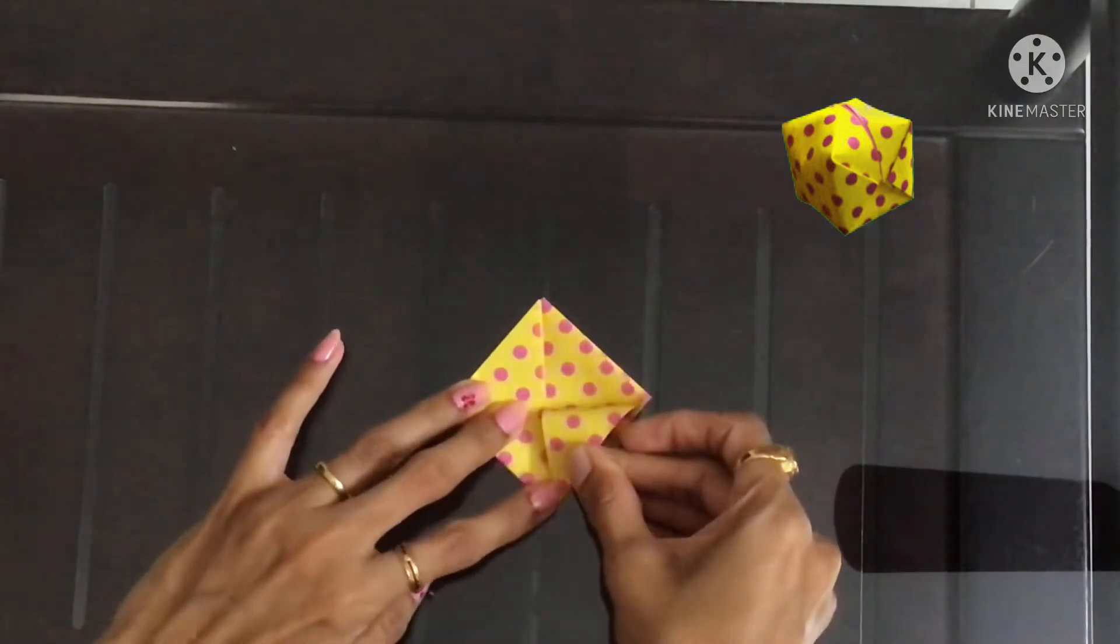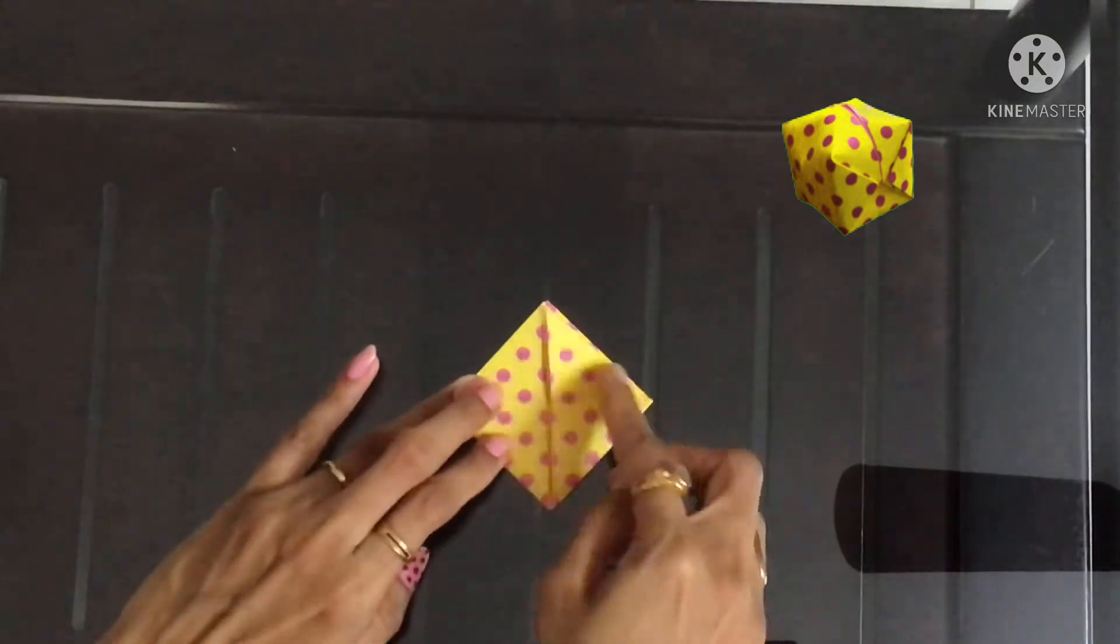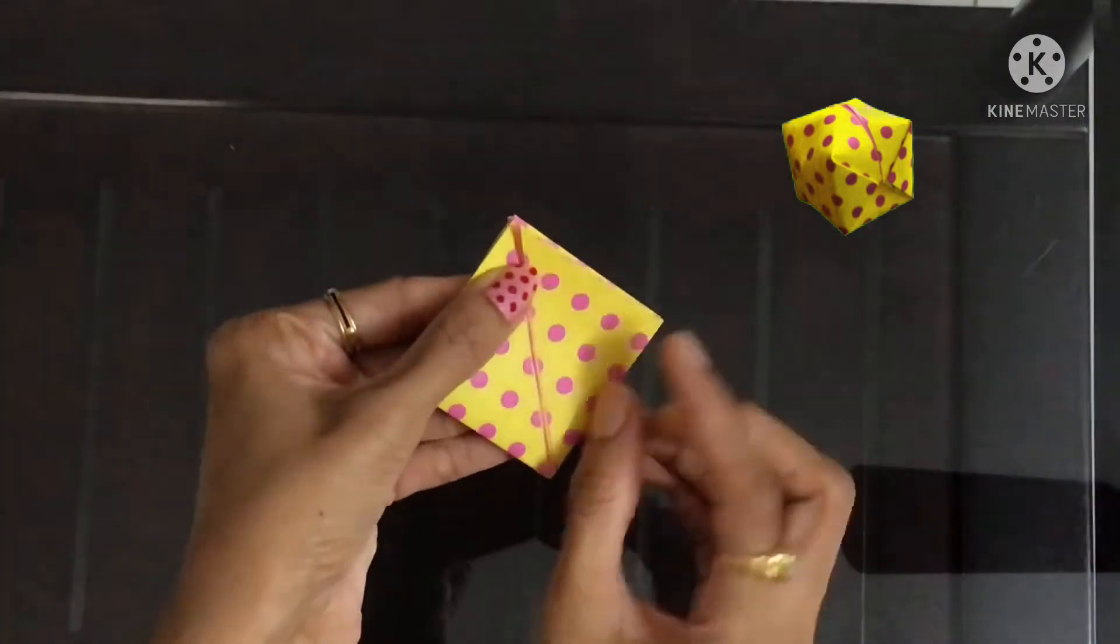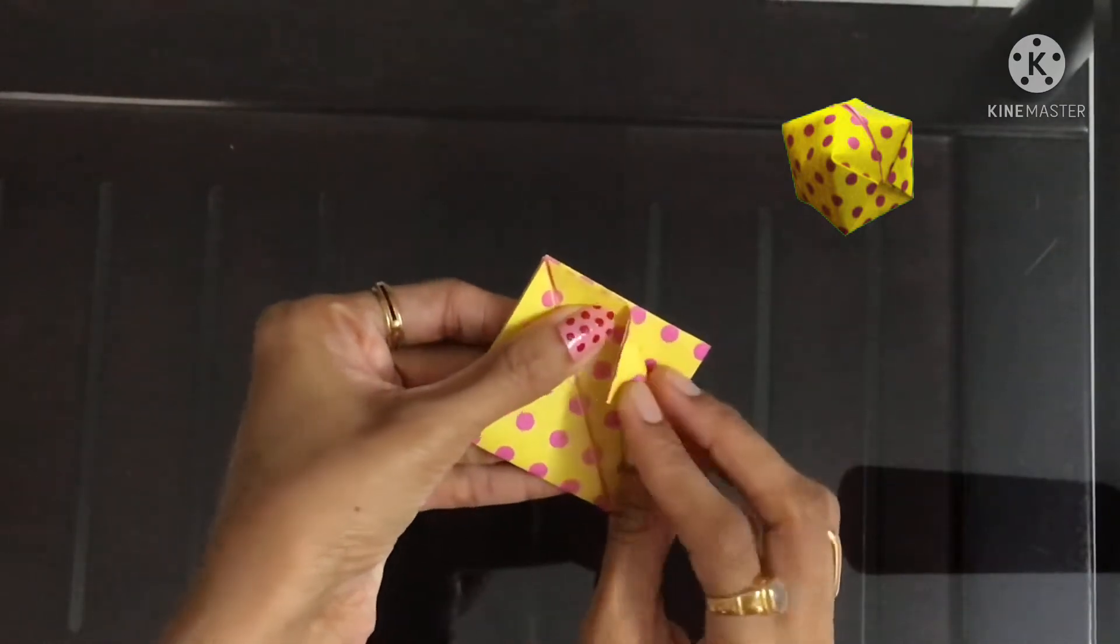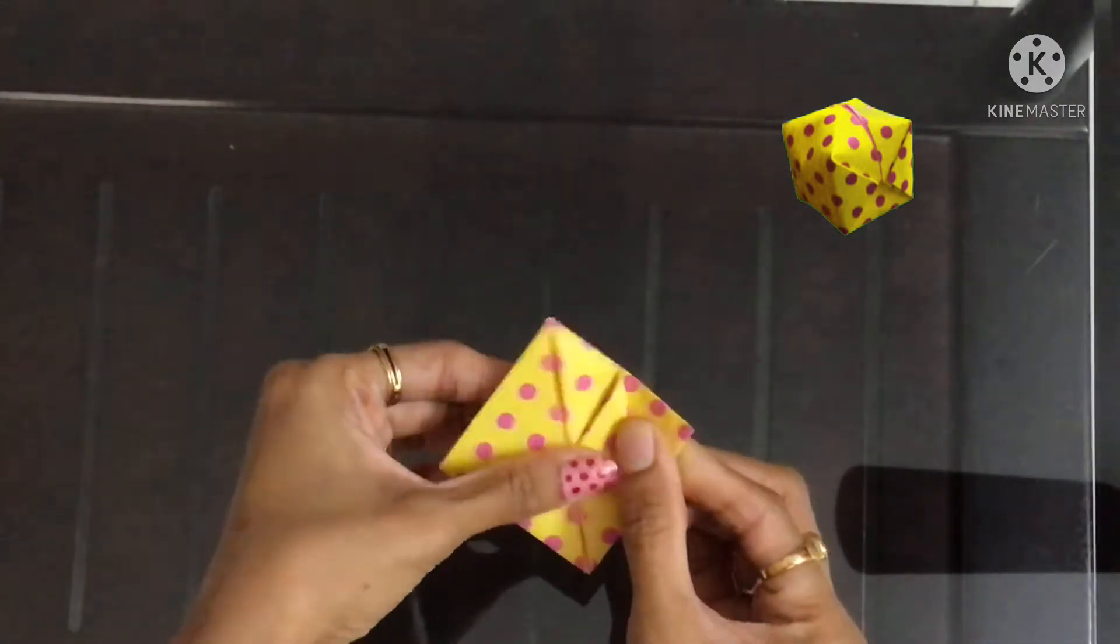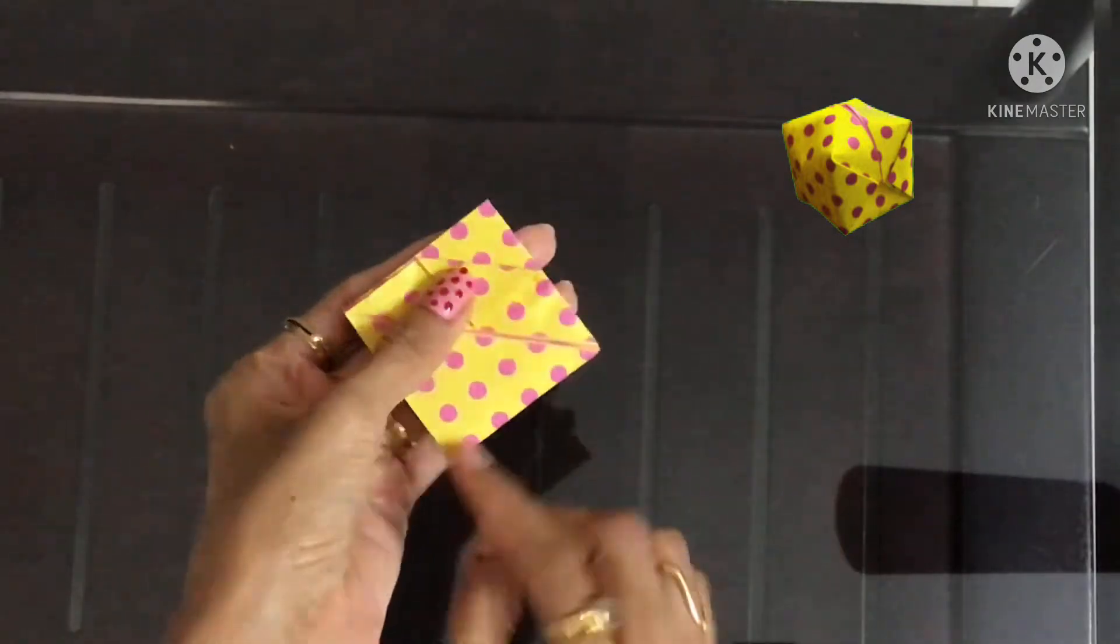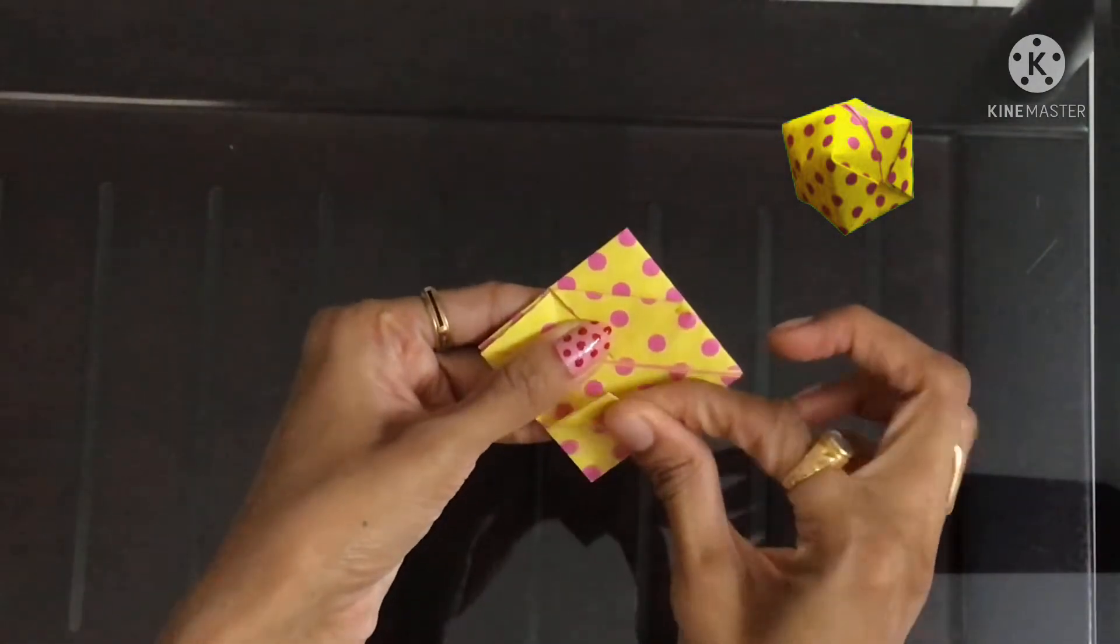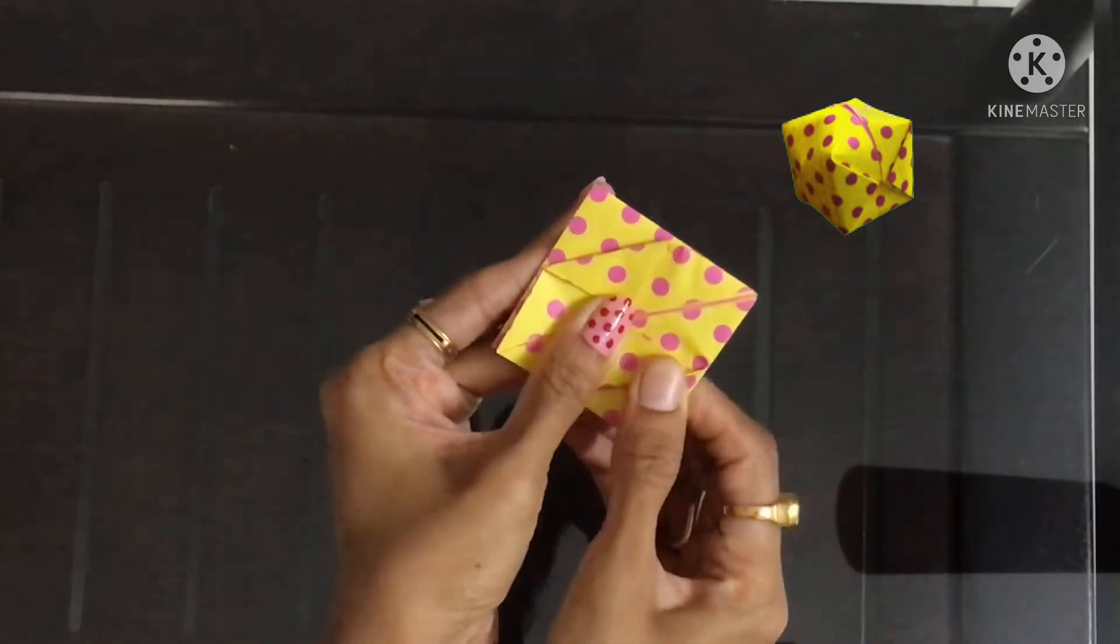Now bring down one flap and just pinch over here to find out the center point. Bring this side tip to the center and make a crease. Do the same thing on all four sides.